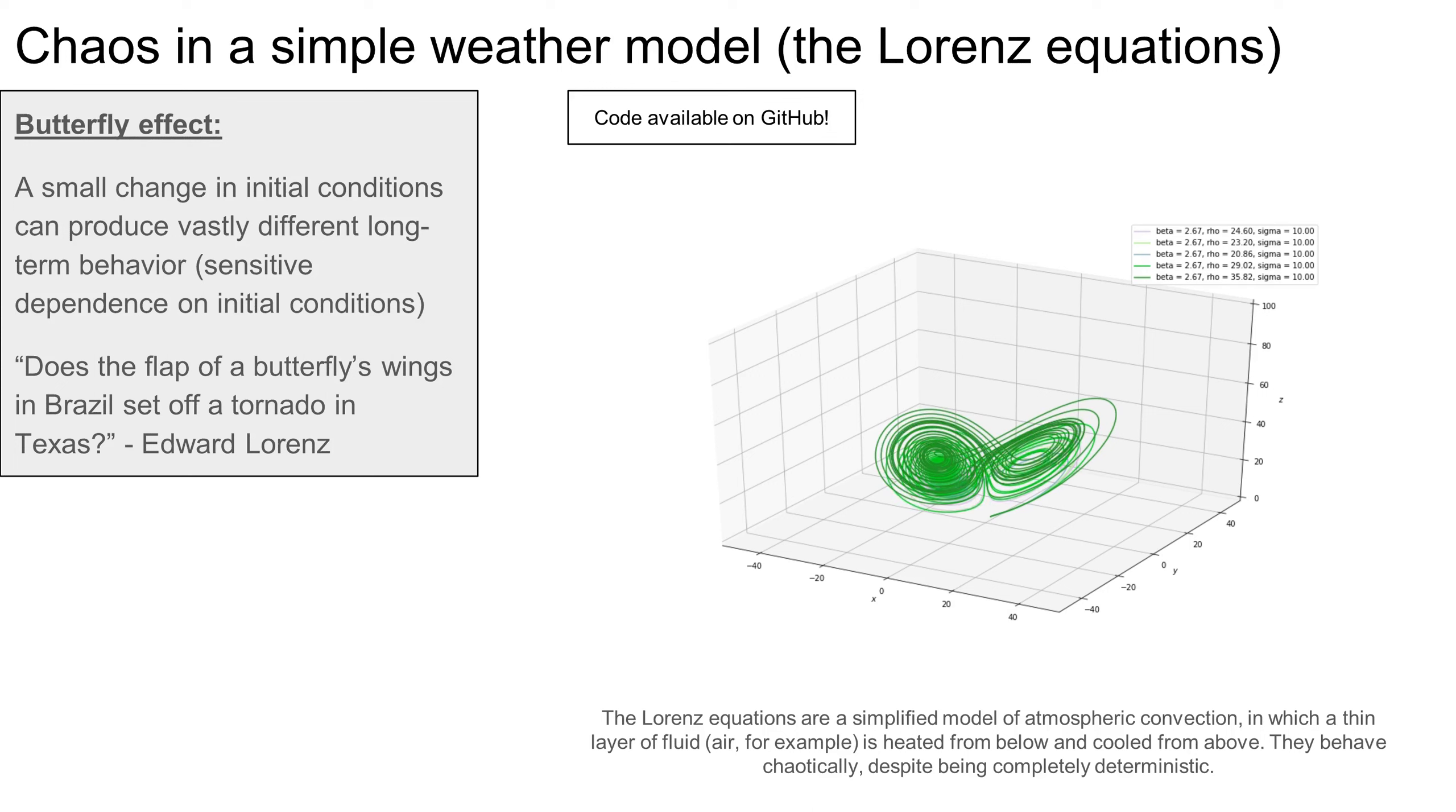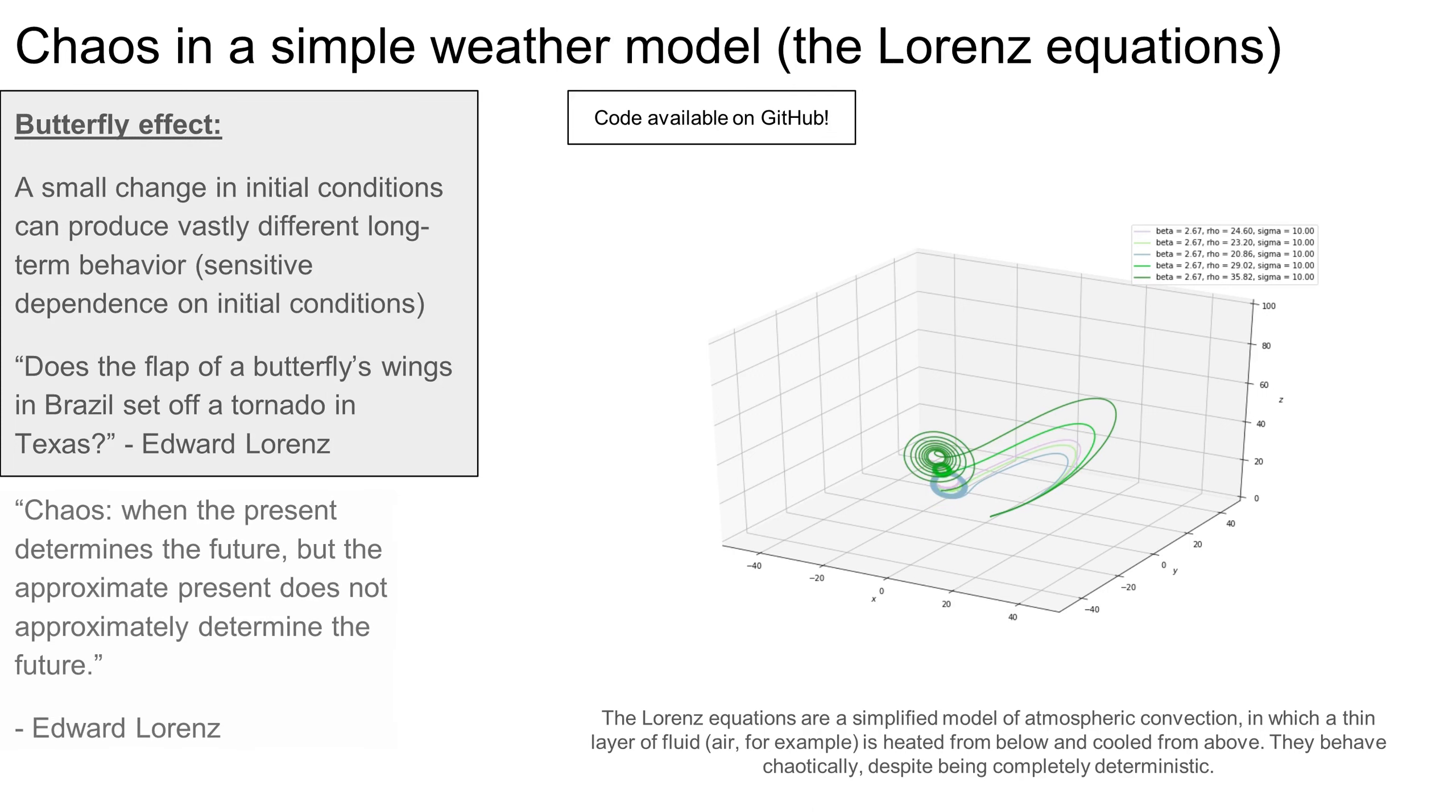I'll close by reiterating Lorenz's description of chaos: when the present determines the future, but the approximate present does not approximately determine the future.